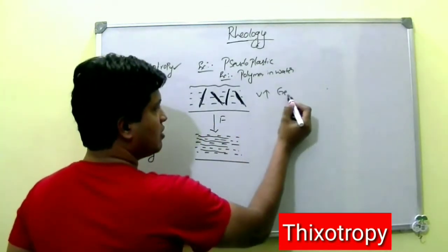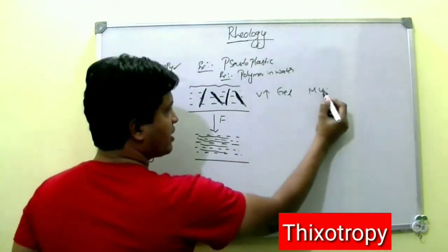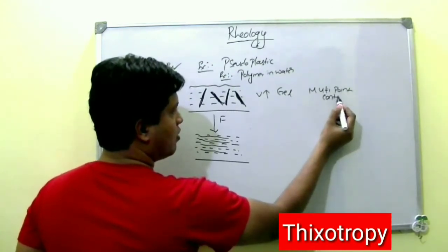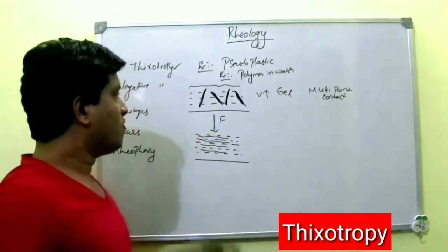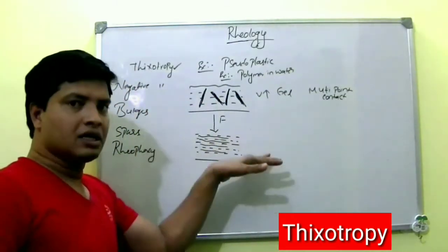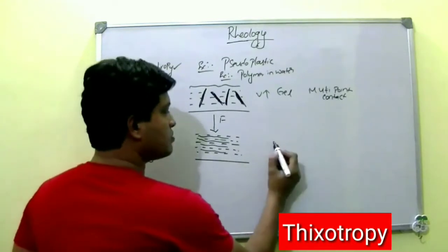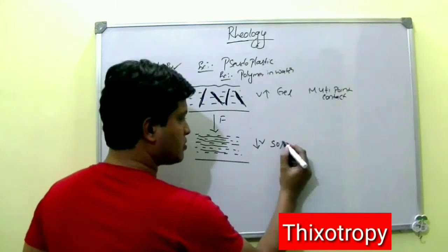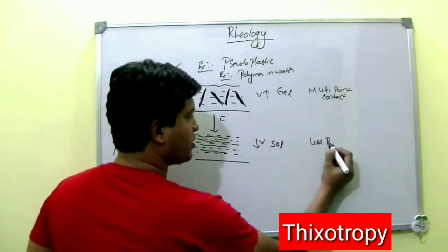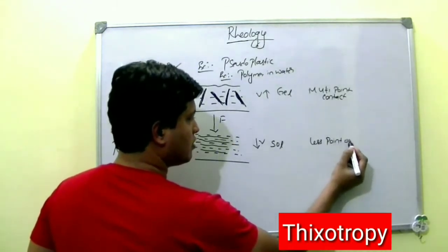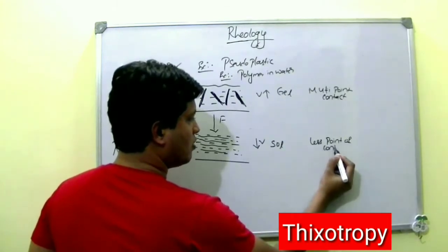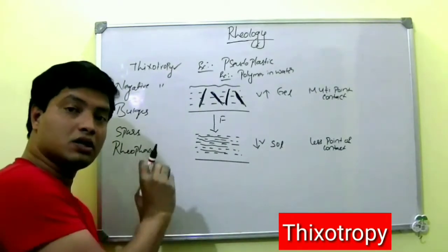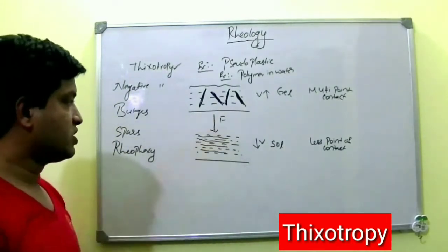Initially it is a gel with multiple points of contact. When you apply shear stress, as the polymers align in the direction of flow, viscosity decreases. These polymer strands have fewer points of contact with the water molecules when shear stress is applied.